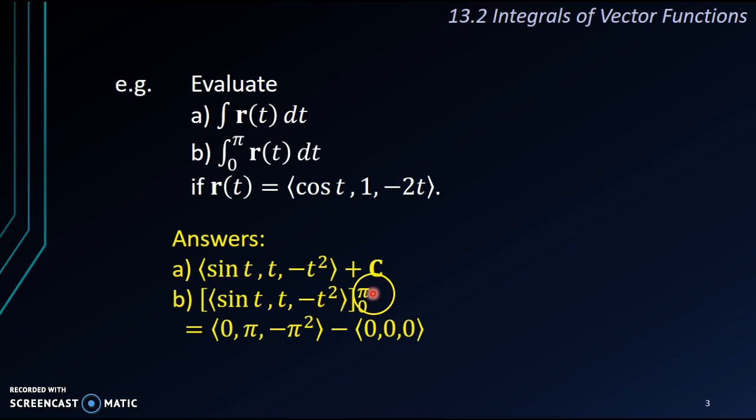That means we're going to apply the upper limit inside the t, which will give us (0, π, -π²), minus the vector from the lower limit, that will give us (0, 0, 0). Therefore, the answer for question b, it will give us (0, π, -π²).